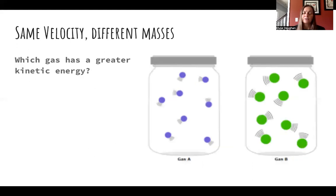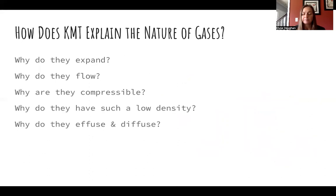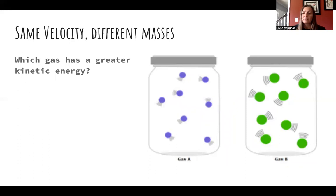If two gases have the same velocity but different masses — gas A with smaller mass and gas B with larger mass — then at the same velocity, gas B will have greater kinetic energy because the ½mv² expression has a larger m. We need to be able to interpret this whether we're given words, particle diagrams, or numeric values.